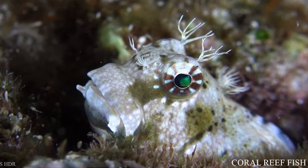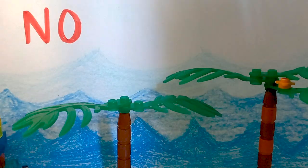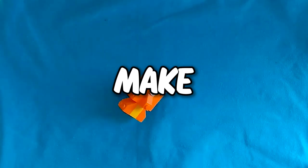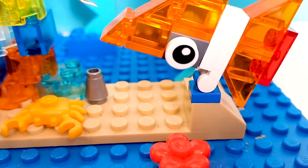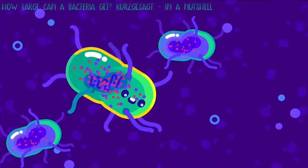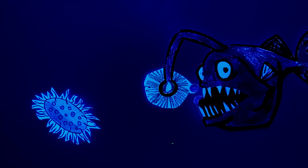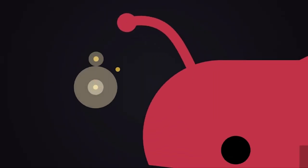But what if you can't make light? No problem! Animals that can't make their own luciferin or luciferase can get these molecules by eating other bioluminescent organisms. Some of them have a distinctive symbiotic relationship with bioluminescent bacteria.